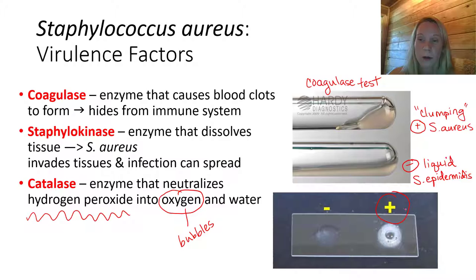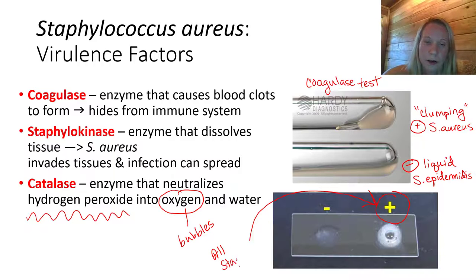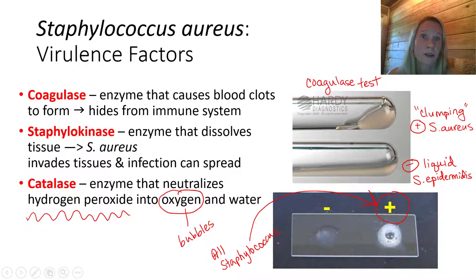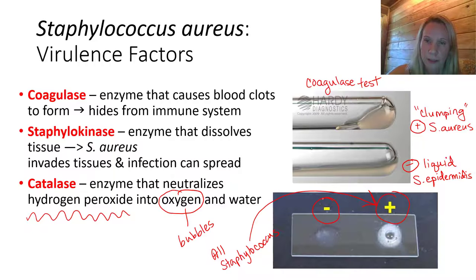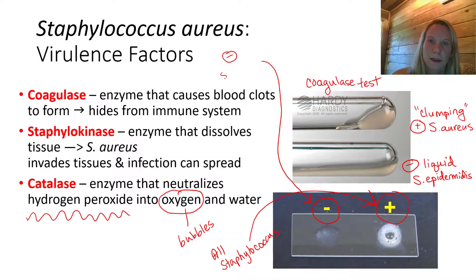Catalase is actually a feature of all bacteria within the genus Staphylococcus. So it wouldn't be a good test to differentiate Staph epidermidis from Staph aureus, since both would test positive. But it would be a good differential test between Staph aureus and Streptococcus, because Streptococcus shows a negative reaction — that's a feature of Streptococcus bacteria.